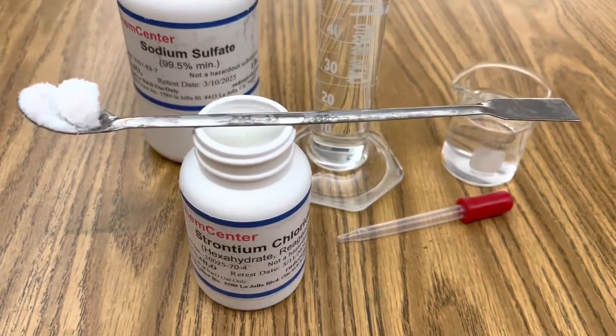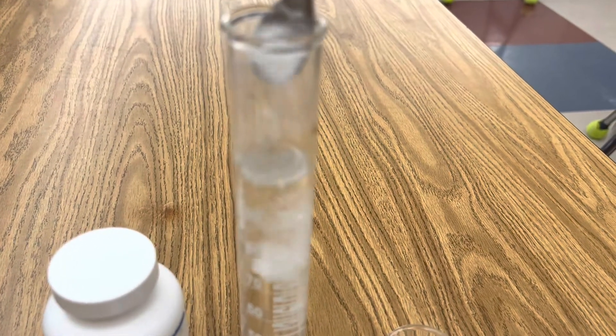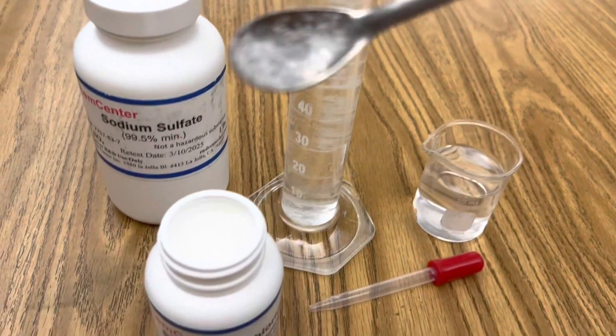Next add 8 grams of strontium chloride to 100 milliliters of distilled water and stir the solution until it's aqueous.